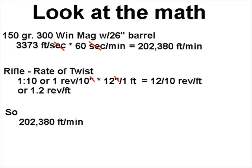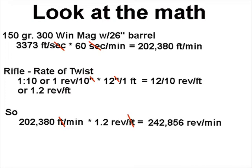So how fast is the bullet rotating? We know 202,380 feet per minute times 1.2 revolutions per foot gives us 242,856 revolutions per minute — about one-quarter of a million RPMs. Checking units: feet on top, feet on bottom, they cancel out, confirming the result.